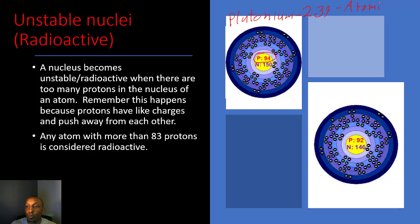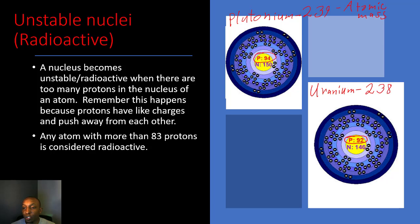This atom has 94 protons in the middle, and that's what makes it radioactive because all these positive charges are pushing away from each other. Now this next element has 92 protons, which means it's uranium. Its atomic mass gives us 238, so we're looking at uranium-238. Once again it has more than 83 protons in the nucleus, which means all these protons are trying to repel or push away from each other, making this nucleus unstable or radioactive.